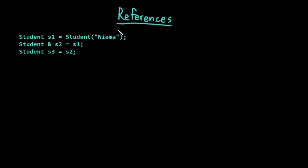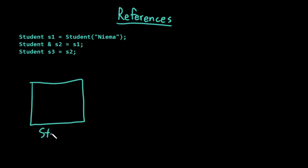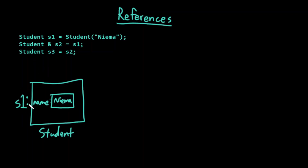Let's work out this small code example. We have a student class with an instance variable of type string called name. On the first line, I'm creating a new student object. It has an instance variable being initialized to the string Nima, and this object is called S1. So I've created a student object whose instance variable is a string object, and the student object is called S1.